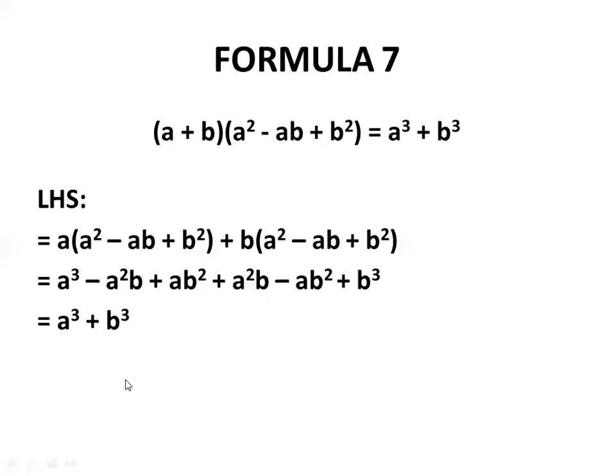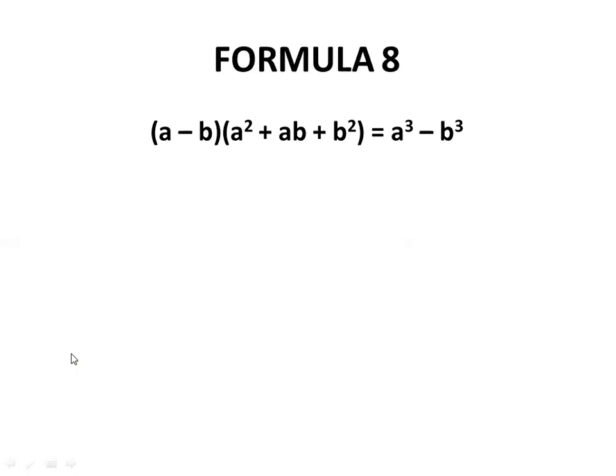I have told you earlier, a³ - b³ is equal to (a - b)(a² + ab + b²). Let's derive. We begin again with LHS.